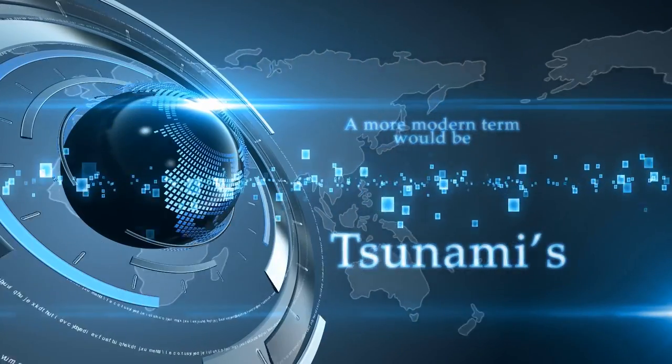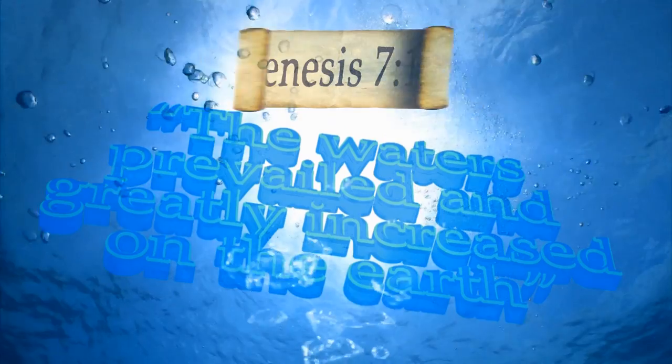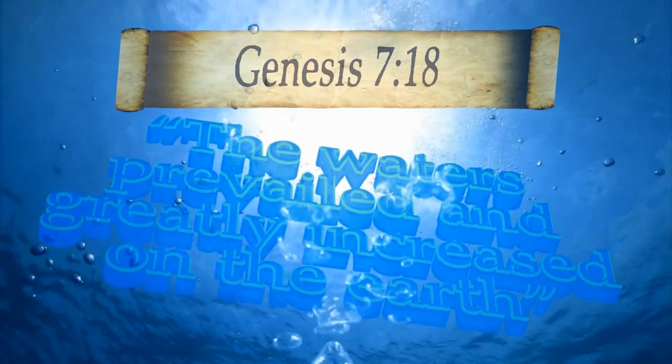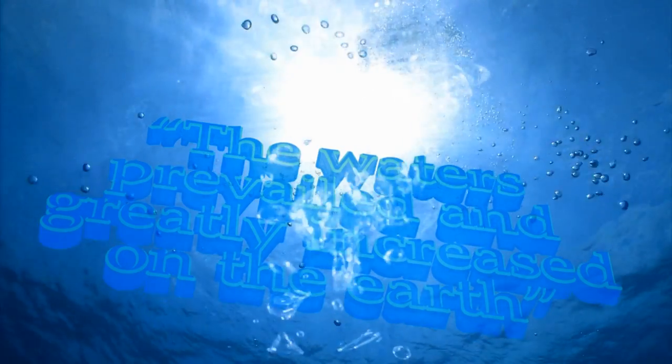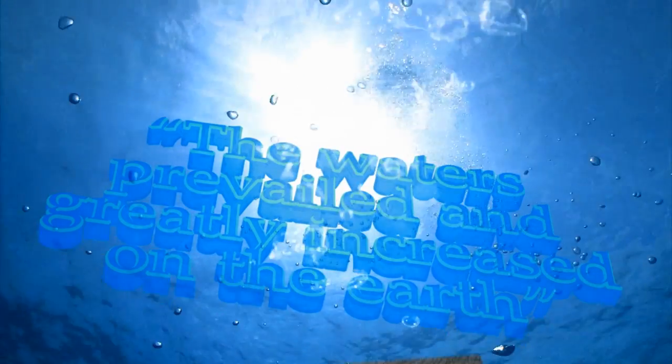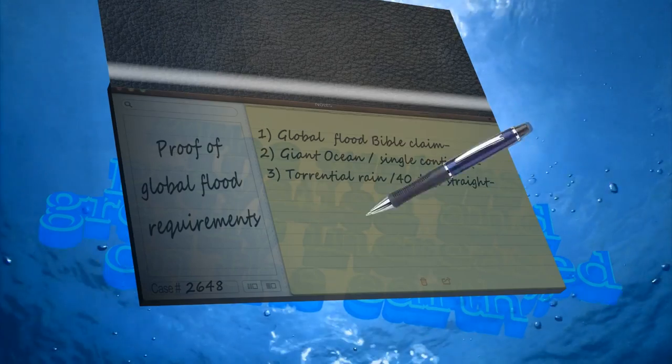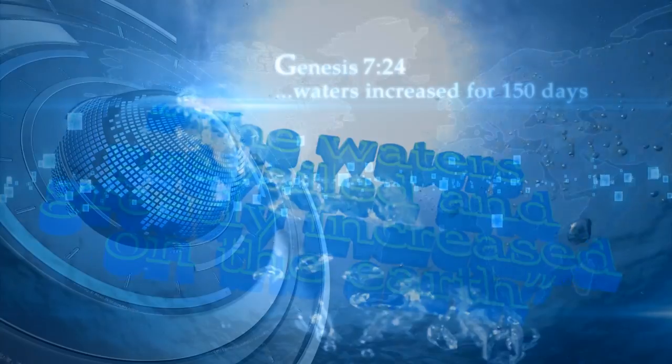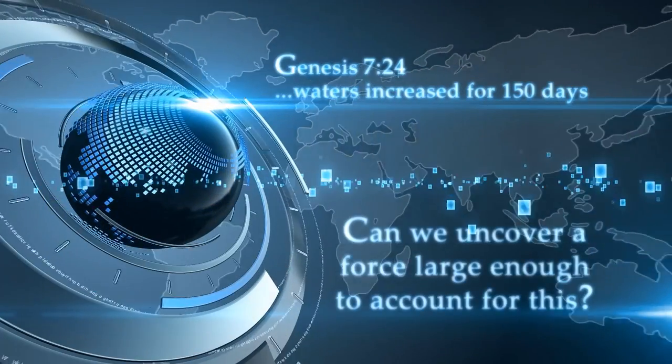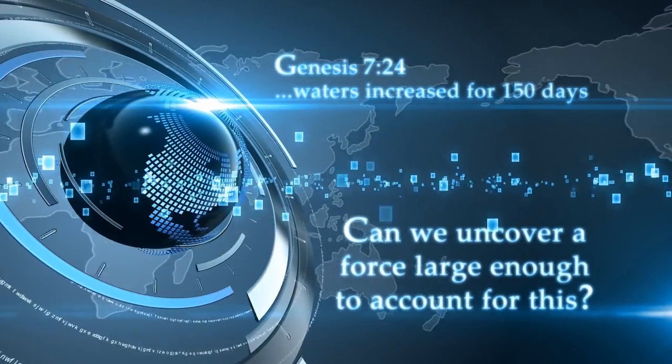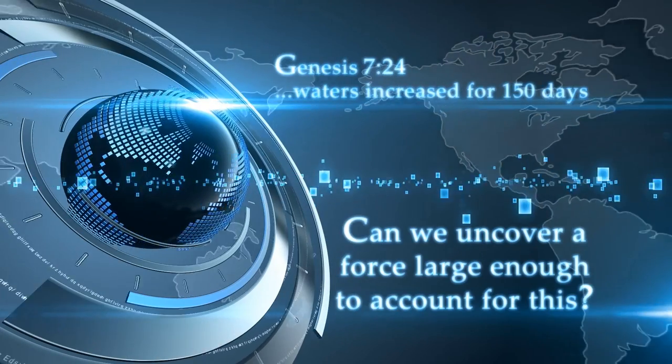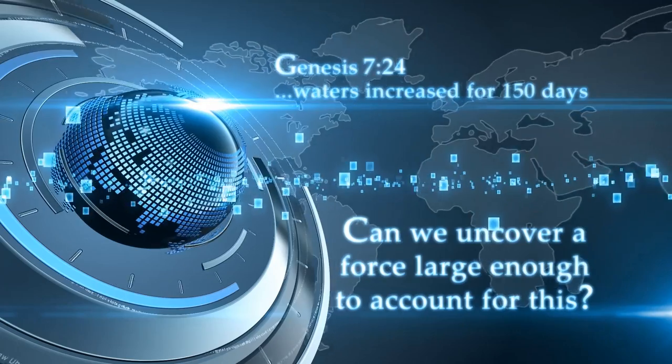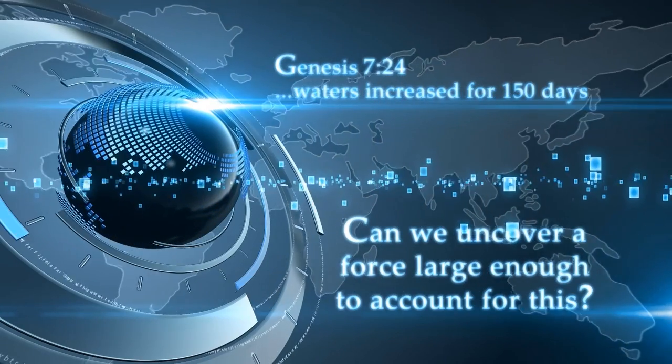In Genesis 7:18, it testifies that these waters prevailed and greatly increased upon the Earth. This implies that this once immense ocean ruled over the land. Verse 19 says the waters rose and even covered the high mountains. So, if this event is genuine, this investigation has to find a source to account for this prevailing. Genesis 7:24 states the waters flooded the Earth for 150 days, which gives us an even greater force to find.